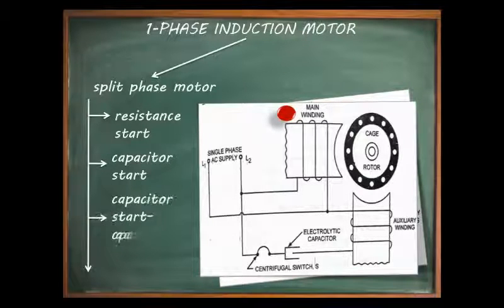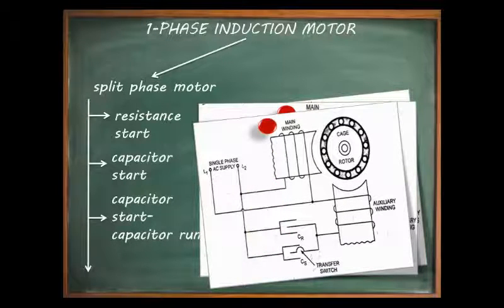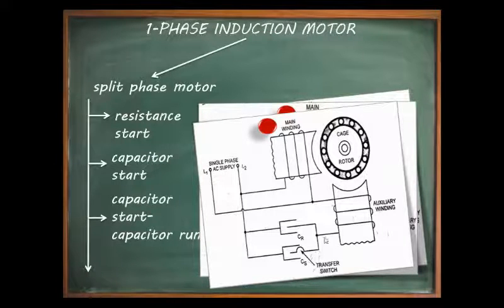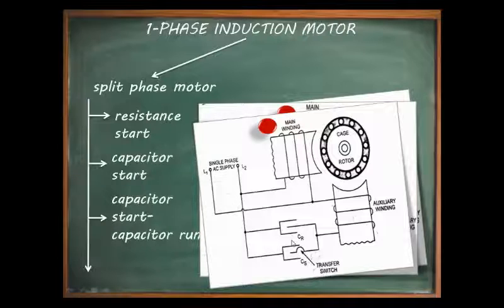The third type of split phase induction motor is the capacitor start capacitor run single phase induction motor. In this type, two capacitors are used — CS (starting capacitance) and CR (running capacitance). The CS is connected with the centrifugal switch and is removed from the circuit once the motor picks up speed, but since CR remains connected, the motor is called capacitor start capacitor run.